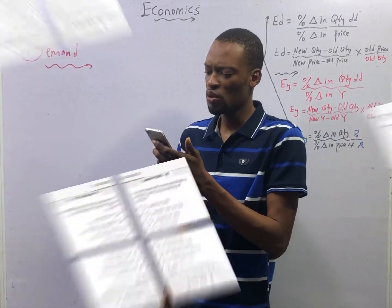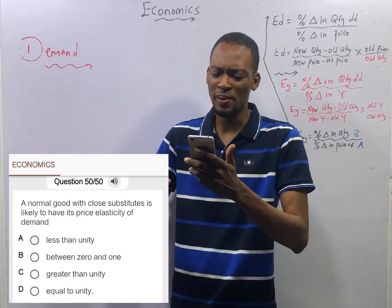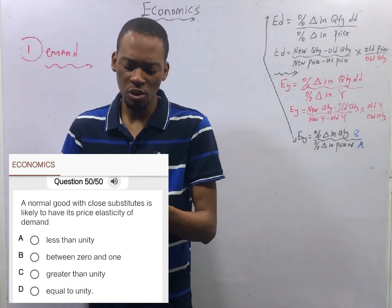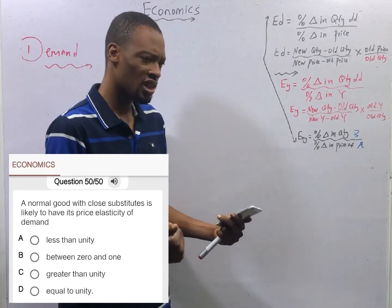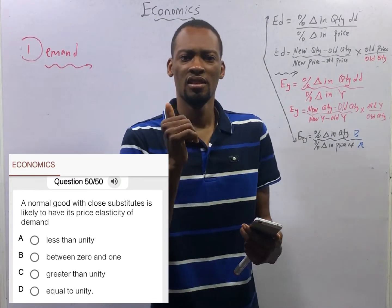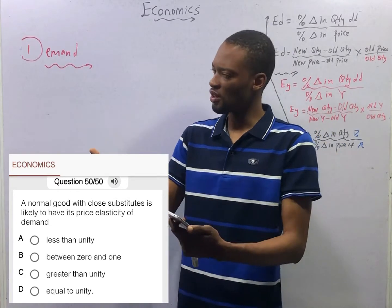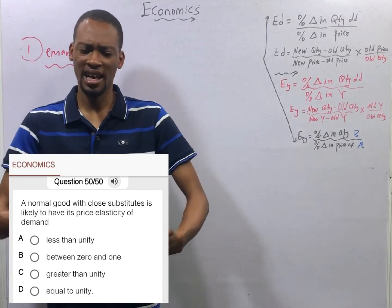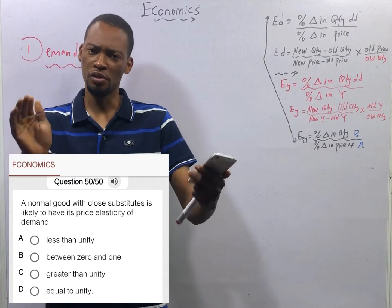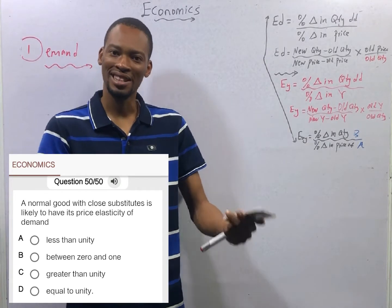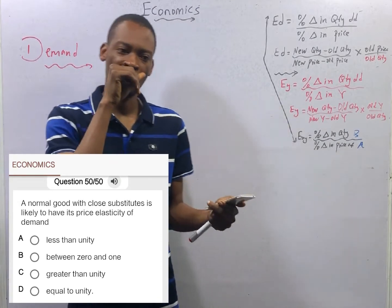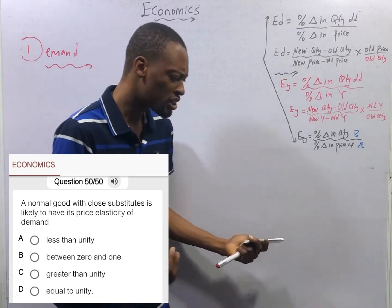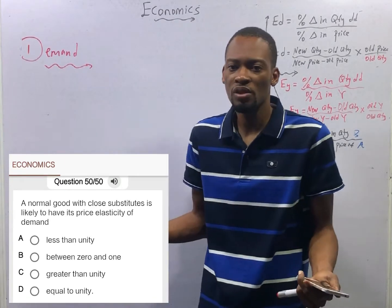Now let us see questions. A normal good with close substitutes is likely to have its price elasticity of demand to be dash. A normal good with close substitutes. Now, normal goods are goods that as the price increases, the quantity will have to drop. Normal goods are goods that people buy as their income increases, they buy more. Which means how much you have determines how much goods you have. And the more money you have, the more goods you can afford.